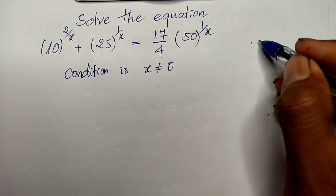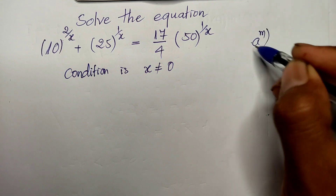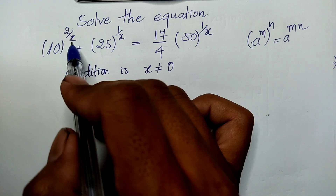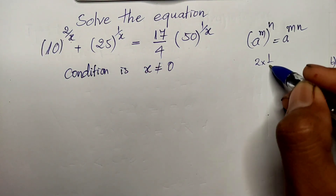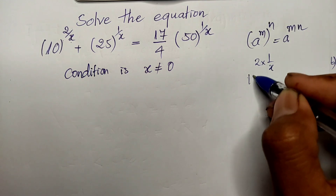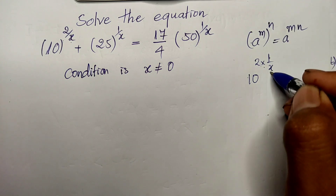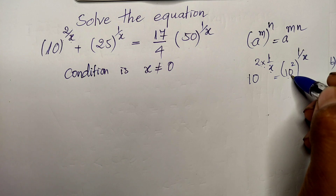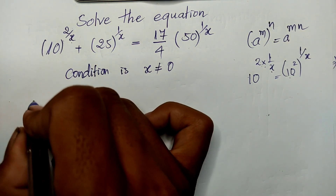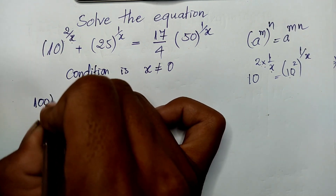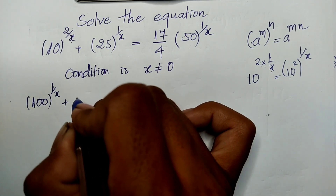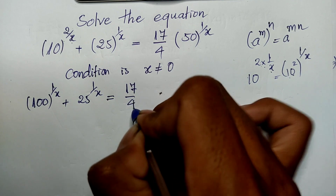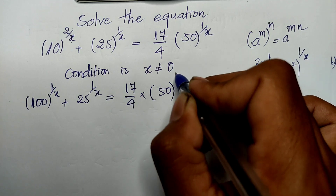Now, for 10 power 2 divided by h, we use the rule that a power m times n equals a power m multiplied by n. So 10 power 2 over h equals 10 squared, power 1 over h, which equals 100 power 1 divided by h. So we can rewrite the equation as: 100 power 1 over h, plus 25 power 1 over h, equals 17 divided by 4, multiplied by 50 power 1 over h.